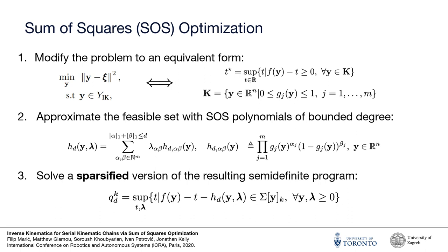We briefly outline the steps here, but please see the references in our paper for further details. We begin by converting our problem into a standard form used by the solver. This form is then used to relax the feasible set with the convex cone of sum of squares polynomials of bounded degree. Finally, a semi-definite description of the cone of sum of squares polynomials is used to transform the relaxed problem into a convex semi-definite program that exploits the natural sparsity of our kinematic constraints.